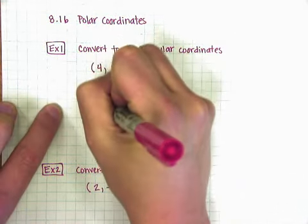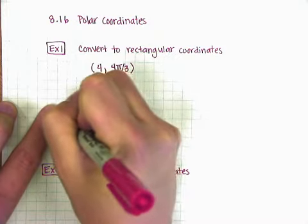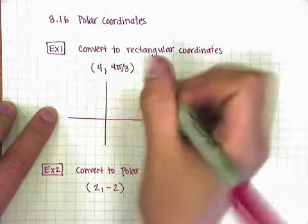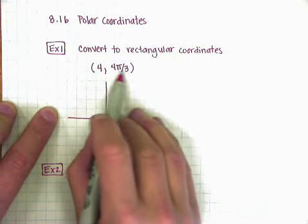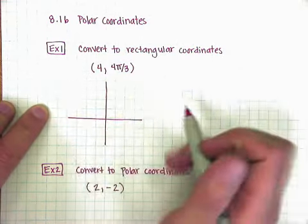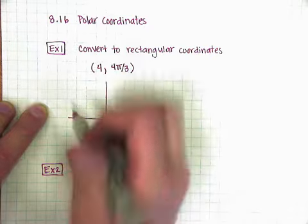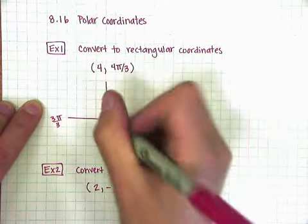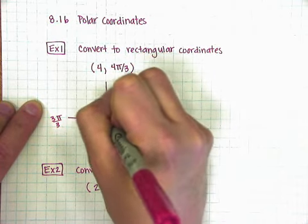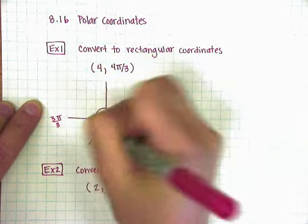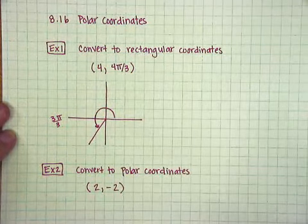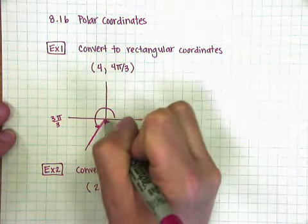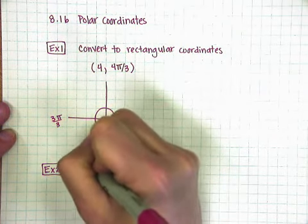So if I were to graph the coordinates I'm given right now, I would go out to the fourth circle. So I'm going to go 4 out, and I'm going to do the direction 4π over 3. Now 4π over 3 is past π, because π is 3π over 3, and I'm going to go a full π over 3 past it. So I would go around until I got to 4π over 3. There's my direction.